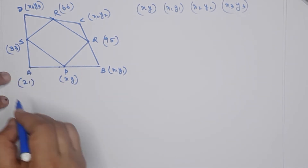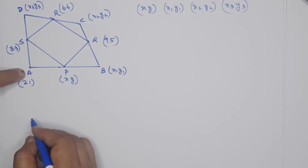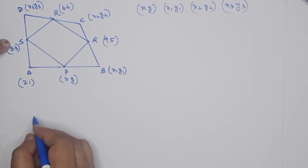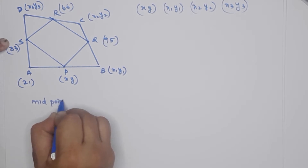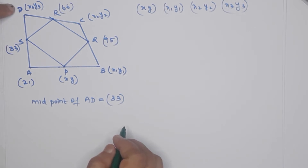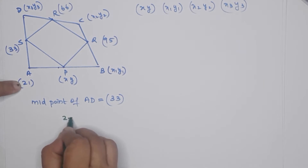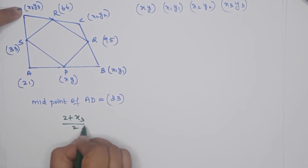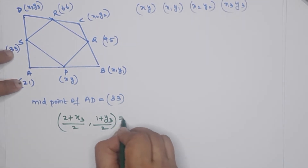The segment AD has a midpoint. This midpoint of AD is the point (3, 3). A is at coordinate (2, 1) so x equals 2 and y equals 1. I am going to write the midpoint of AD. Midpoint of AD equals (2 plus x3 over 2, 1 plus y3 over 2), and that equals (3, 3).